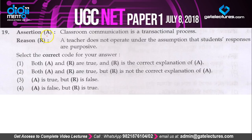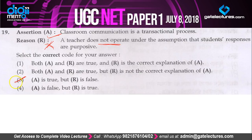Question 19: assertion — classroom communication is a transactional process — this is right. Reason — a teacher does not operate under the assumption that students' responses are purposive — this is wrong; a teacher cannot operate under that assumption. It operates under the assumption that this is a feedback system, and students' feedback will affect the process of learning. So A is true and R is false — correct option is option 3.